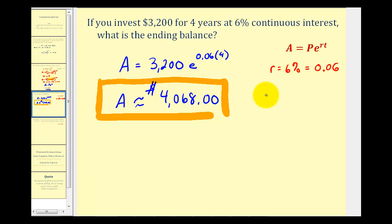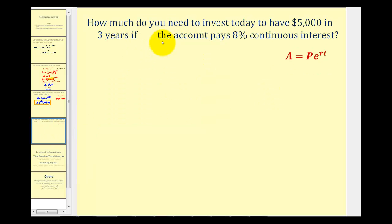Let's take a look at one more example. How much do you need to invest today to have $5,000 in three years if the account pays 8% continuous interest? So now we're given the amount we want after three years, or A. We want to determine the starting amount, or P.